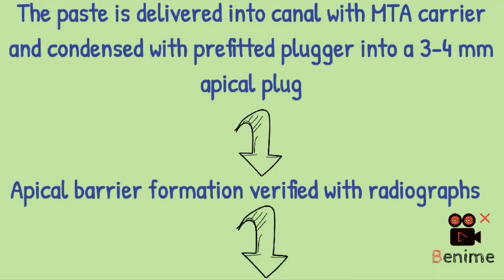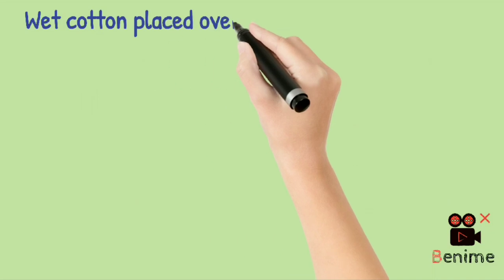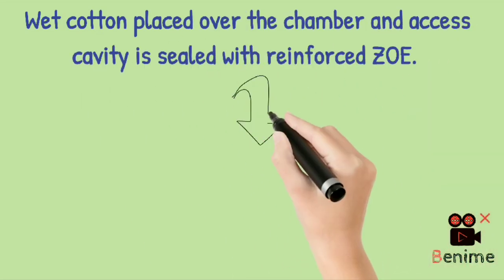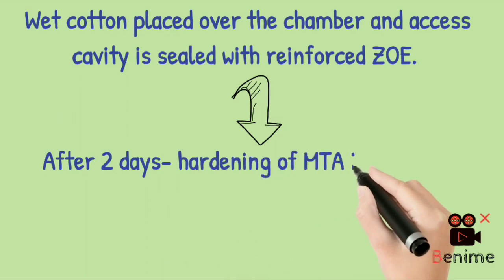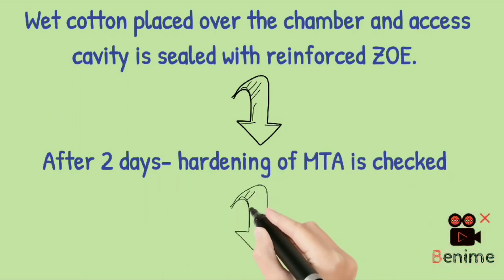Then using a prefitted plugger, condense the MTA well to create an apical plug of 3 to 4mm. Recall the patient after 48 hours and check for apical barrier formation by taking radiographs. But after placing MTA, do not leave the patient without placing a moist cotton pellet over the MTA and then seal it with ZOE. As MTA sets under moist condition, so the wet cotton pellet is used.